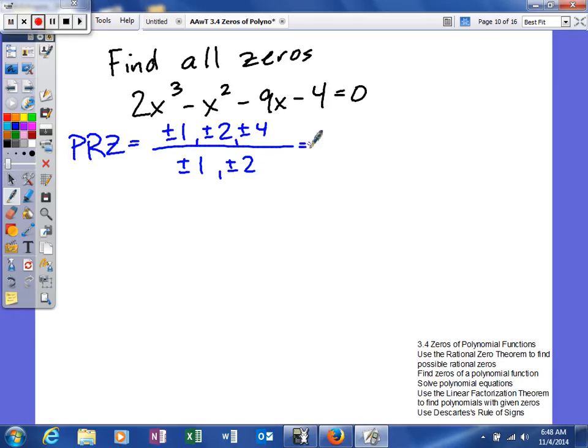So, possible rational zeros, we get plus or minus 1, plus or minus 2, plus or minus 4, plus or minus 1 half. 2 divided by 2 is 1, and 4 divided by 2 is 2, so we don't need to put those. So, that gives us an idea. As you can see, we're going to have six different integers and two fractions.